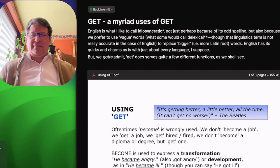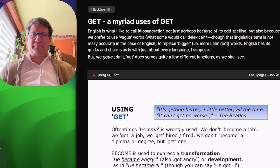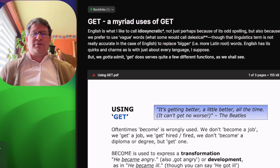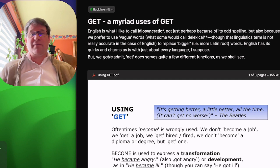Hi. So this video is about the myriad uses of get. English is what I like to call idiosyncratic, not just perhaps because of its odd spelling, but also because we prefer to use vague words to replace bigger, for example, a Latin root word. English has its quirks and charms, as is with just about every language, I suppose. But we got to admit, get does serve quite a few different functions, as we shall see.